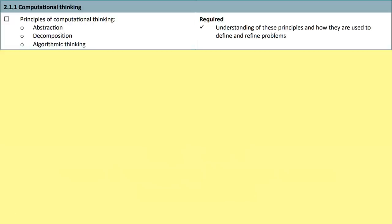For each section I will start with the actual specification from OCR, so you can see exactly what you need to be revising, what is required and what is not required for that topic. We're going to start with the beginning of Paper 2, which is 2.1.1 computational thinking.